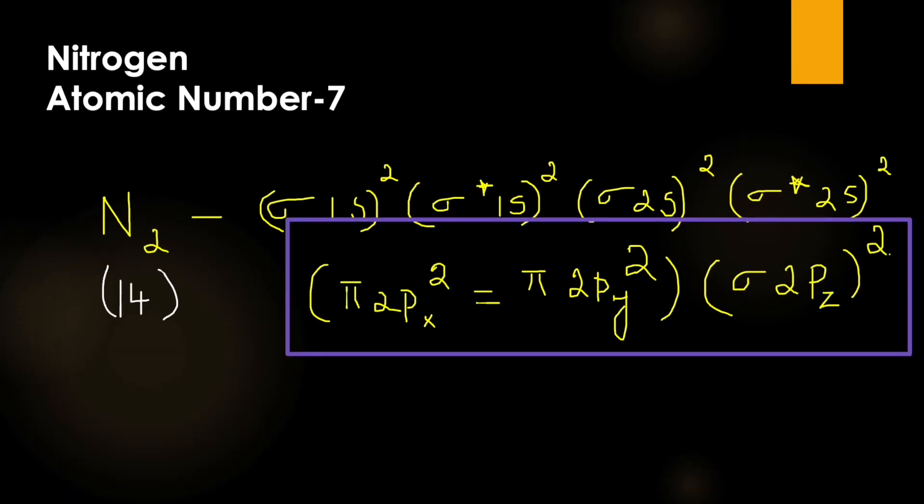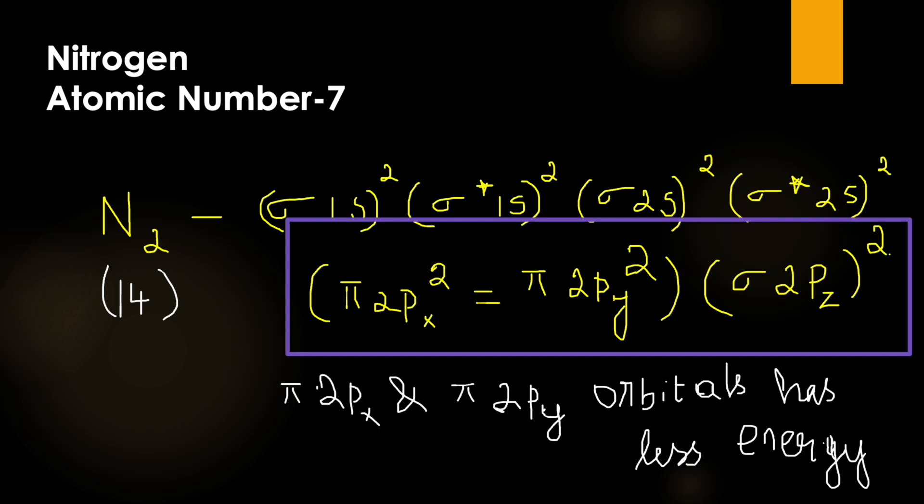If you look at this, here that sigma 2pz orbital has that higher energy. This is because of sp mixing.